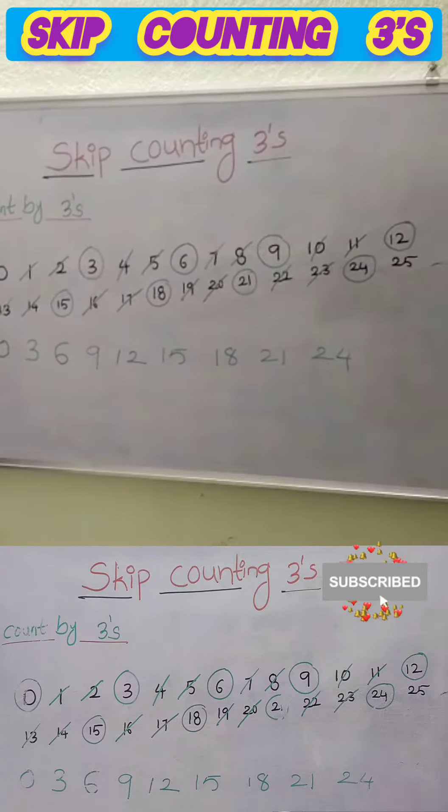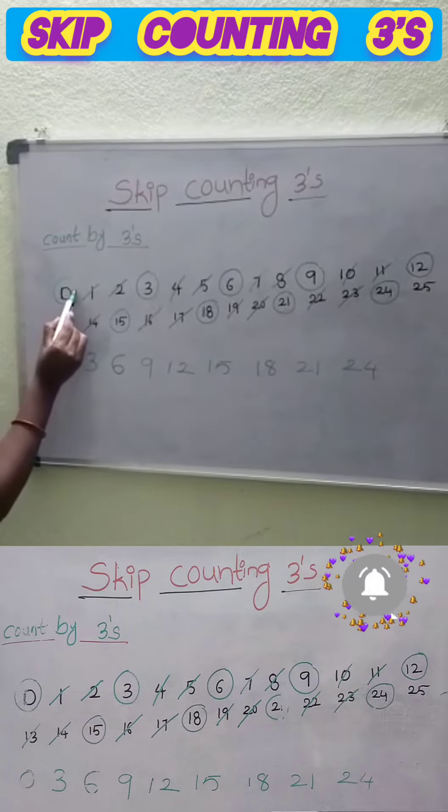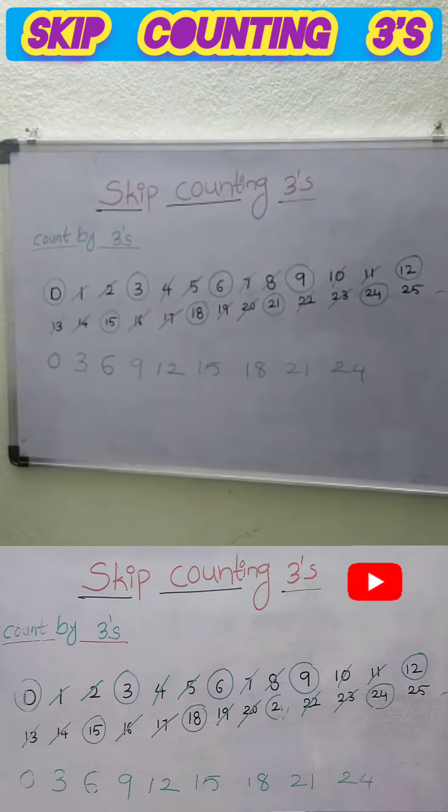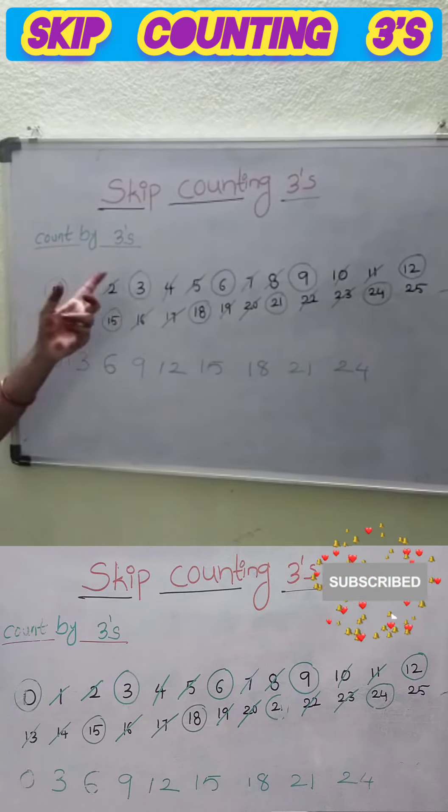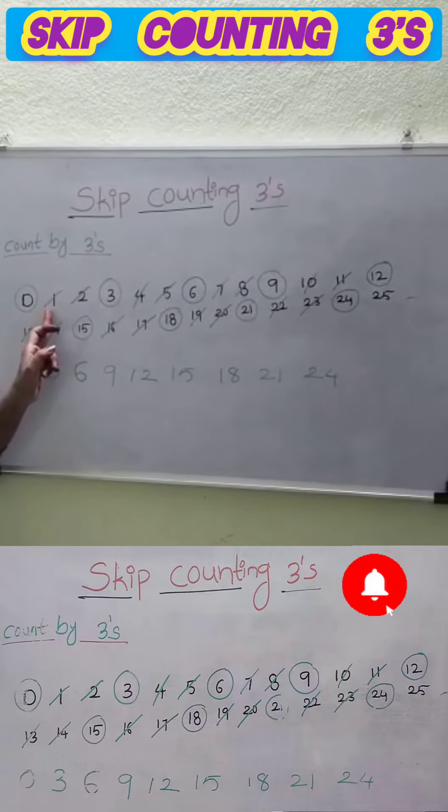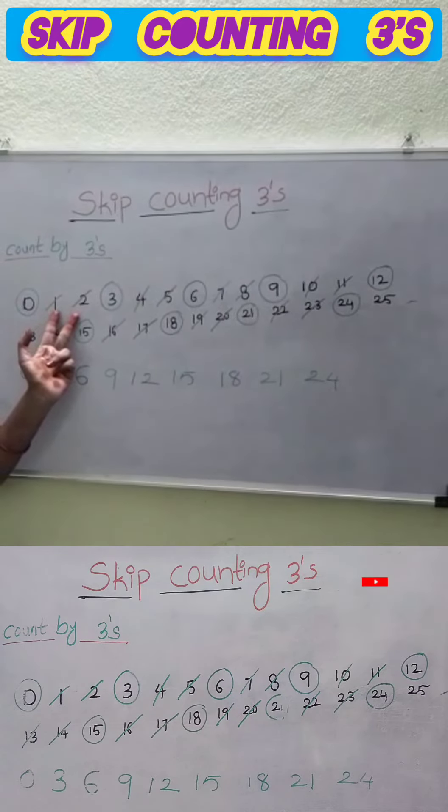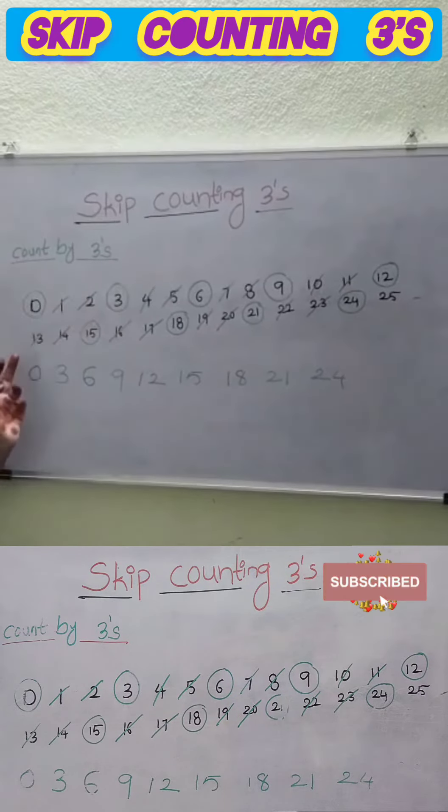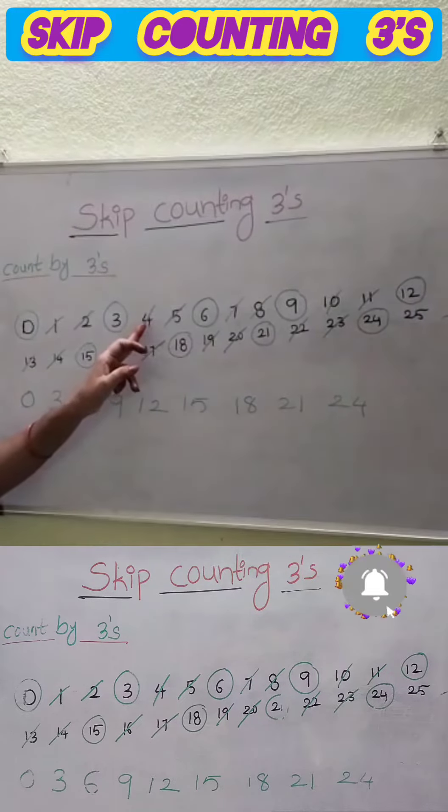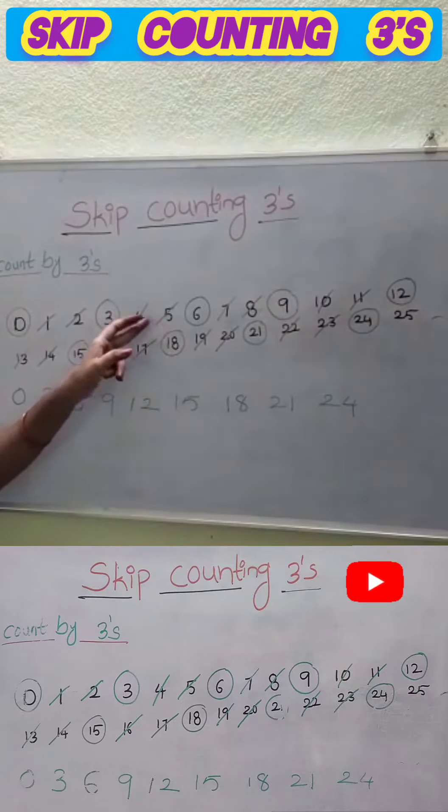Start with 0, we have to skip two numbers then we have to write next number. 0, 1, 2, we have to skip two numbers, then we have to write 3. 0, 3. Again 4 and 5, these two are skipped, write 6.